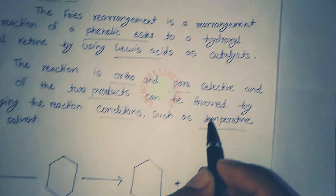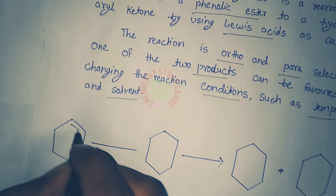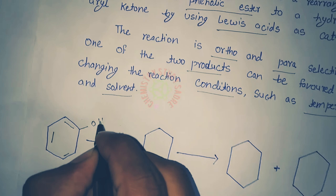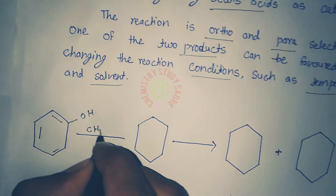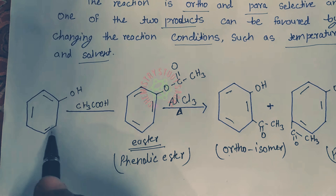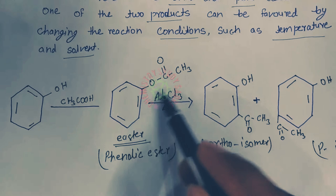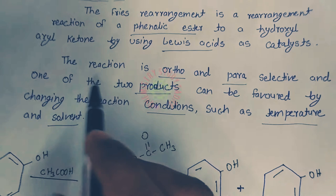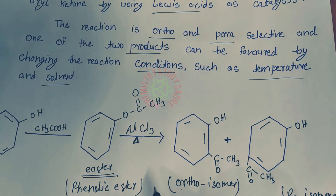Phenol reacts with acid to form an ester. When phenol reacts with acid, it forms a phenolic ester. Phenolic ester can be converted to hydroxyl aryl ketone by using Lewis acid, aluminum chloride.